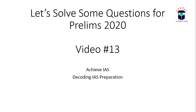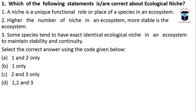Today we will be solving questions from the Environment and Ecology part. The first question is: which of the following statements is/are correct about ecological niche? First, a niche is a unique functional role or place of a species in an ecosystem. Second, higher the number of niches in an ecosystem, more stable is the ecosystem. Third, some species tend to have exact identical ecological niches in an ecosystem to maintain stability and continuity.